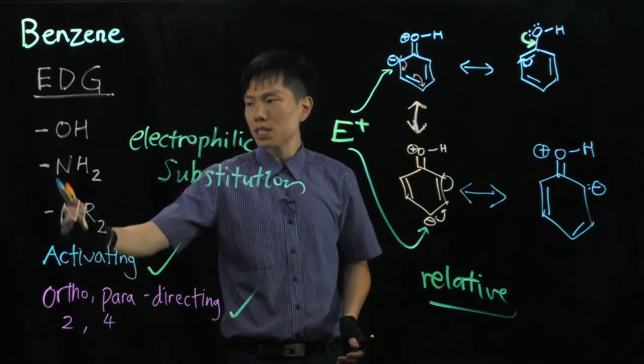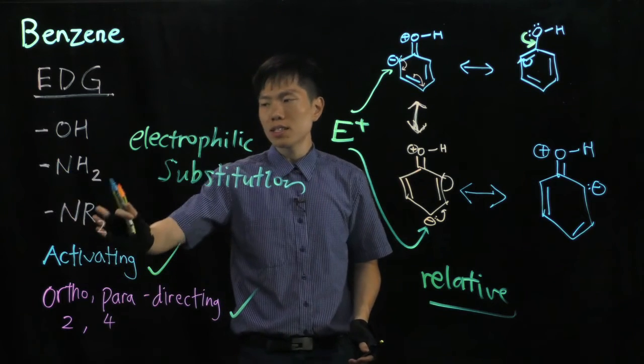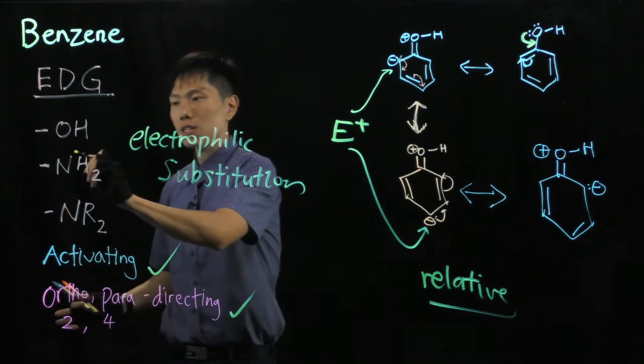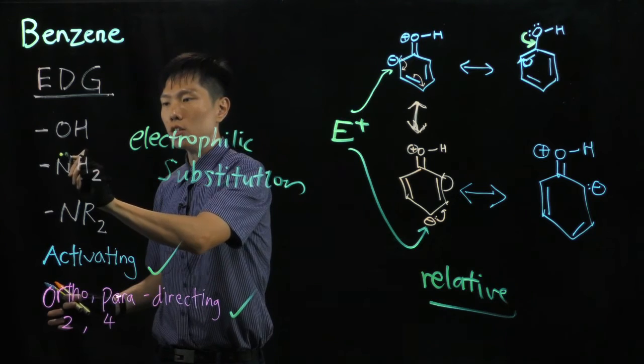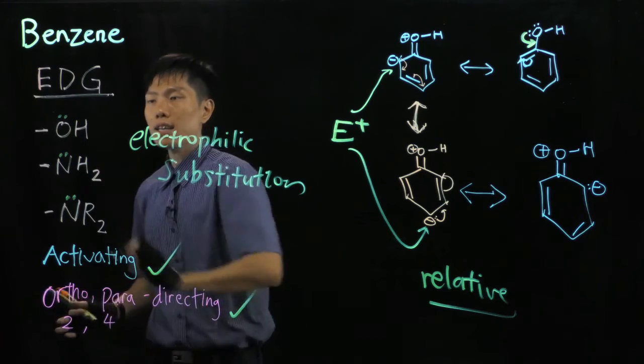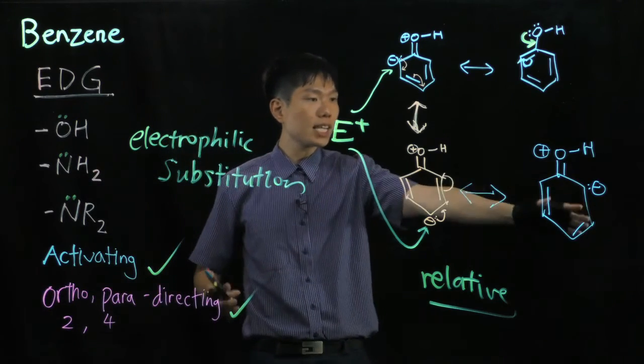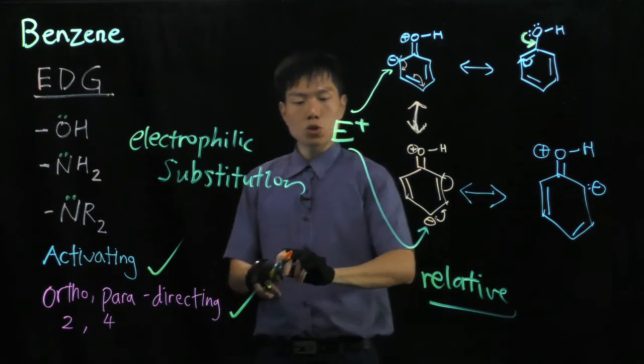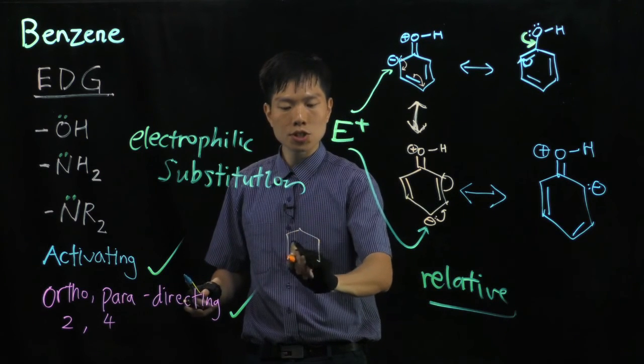So, these two substituents, the amine group and the tertiary amine group, they both work the same way because you have lone pair onto this nitrogen atom that will overlap with the pi orbital of the benzene ring in the same manner. When you draw it out,